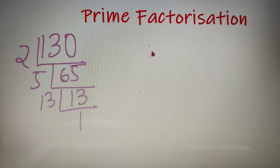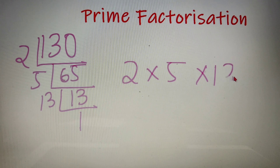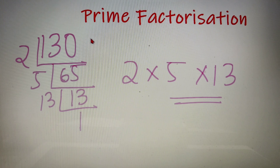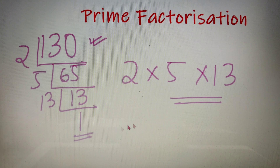So the prime factorization of 130 is equal to 2 into 5 into 13. As you can see, this method is very simple — you just find the smallest prime number that divides the given number, then move ahead with higher prime numbers until you reach 1.